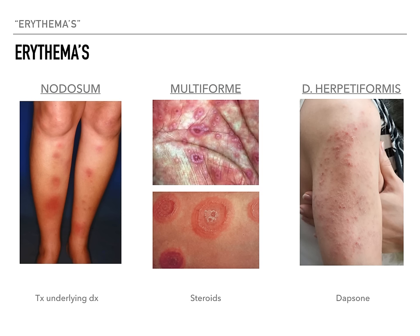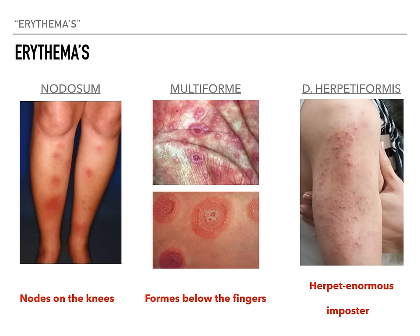My mnemonic for the erythemas: nodes on the knees for nodosum, forms below the fingers for multiforme — it's going to be on the palms — and the herpet-enormous imposter for herpetiformis, because this is the herpes imposter. It looks a lot like herpes, but it's faking — it's just dermatitis herpetiformis.